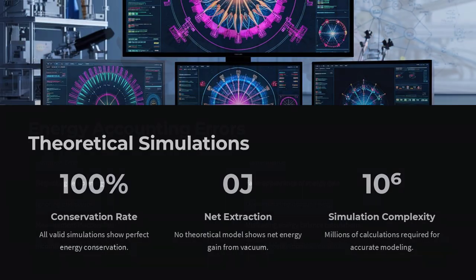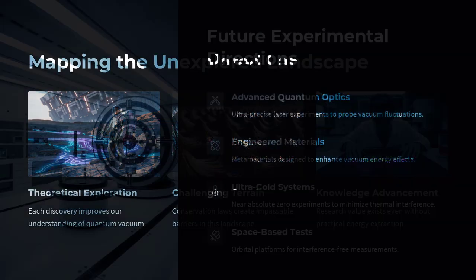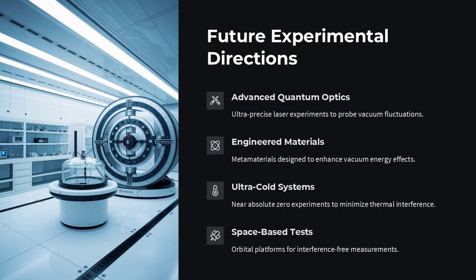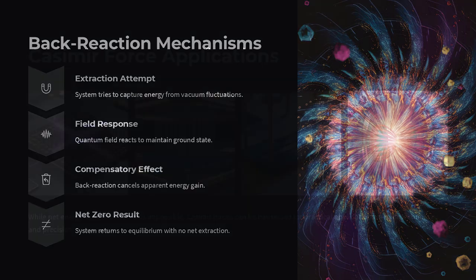At even finer scales, the situation acquires additional layers of complexity. The theoretical frameworks attempting to address vacuum energy extraction must reconcile local, momentary imbalances with global conservation. In any realistic scenario, the act of extraction, whether engineered through the manipulation of boundary conditions or via non-equilibrium processes, requires an external energy input. This input accounts for every joule of energy retrieved, ensuring that the net energy of the overall system does not defy the conservation law.